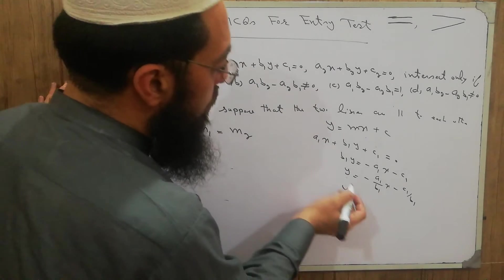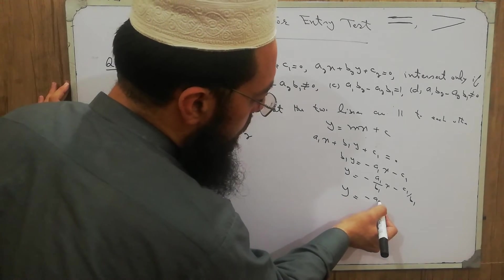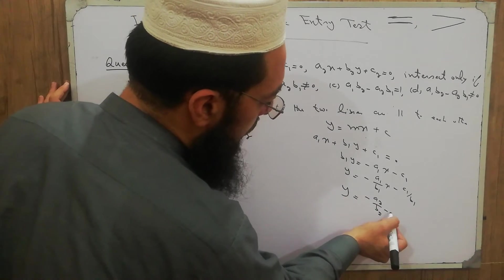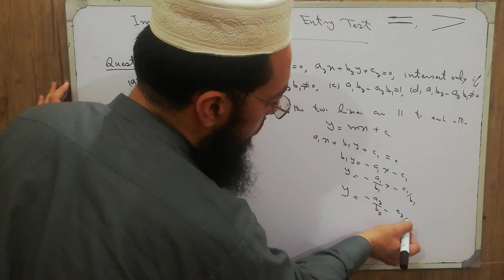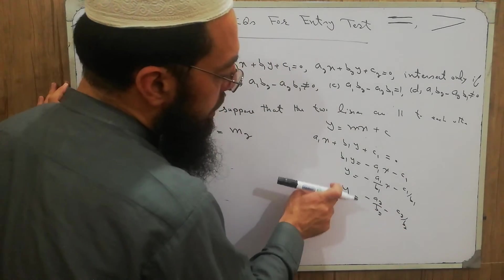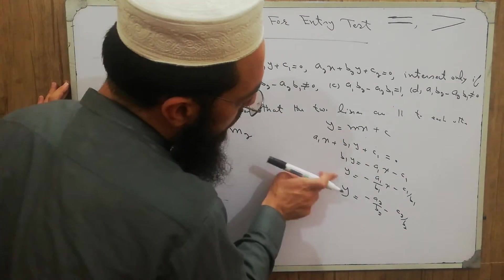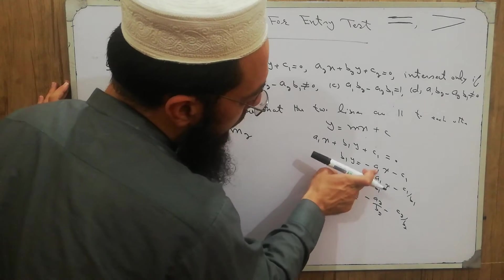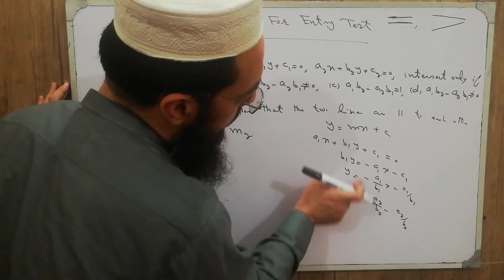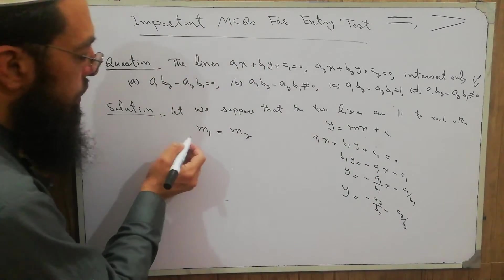Similarly, for equation 2: y = (-a2/b2)x - c2/b2. Comparing these two lines with slope-intercept form, m = -a1/b1 for the first line and m = -a2/b2 for the second line.